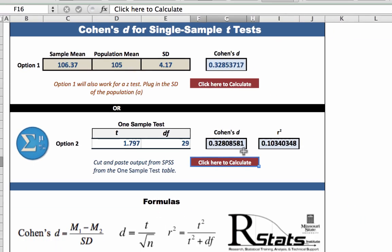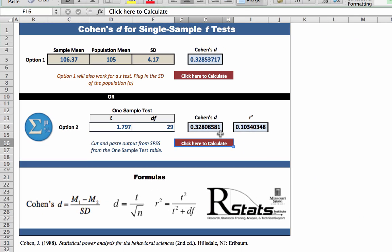This effect size is positive, but if it was negative, we would interpret it in exactly the same way. Just as we interpret a positive or negative t-value the same way. The negative sign just tells us that the sample mean was lower than the population mean. In this case, the sample mean was larger than the population mean, so the effect size is positive.